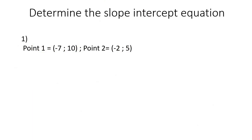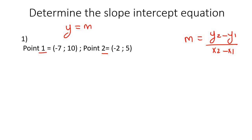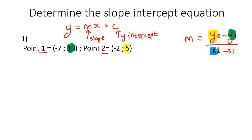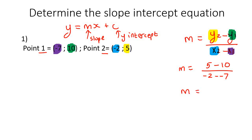Here we determine the slope-intercept equation. They've given us point one and point two, so we write out our formula for the slope. Remember m is the slope or gradient, and c is the y-intercept. The formula takes the y-value of point two, minus the y-value of point one, over x-value of point two minus x-value of point one. So m equals 5 minus 10 over negative 2 minus negative 7. You can type this into your calculator exactly like that, and you'll end up with a slope of negative one.